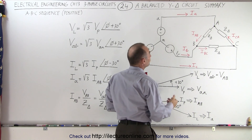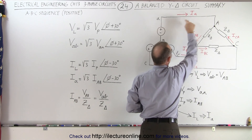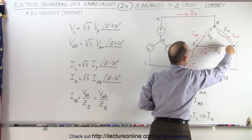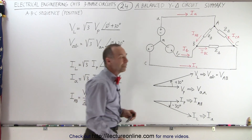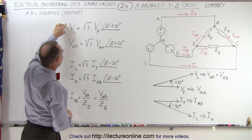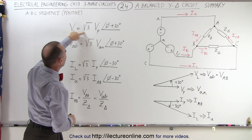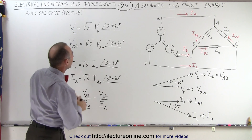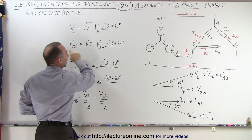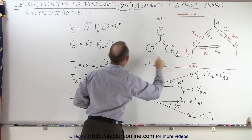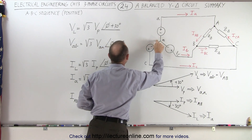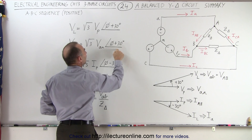The line currents — remember, the line current IA is the current from the source to the load. The phase currents are the currents inside the load across the three impedances. What we want to show is that the line voltage is the square root of 3 times the phase voltage with a positive phase angle difference of 30 degrees. For example, the voltage from A to B is equal to the square root of 3 times the voltage between A and N, with an added phase angle of 30 degrees.